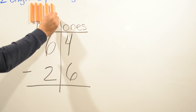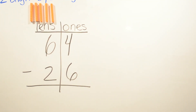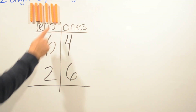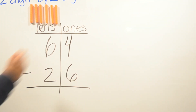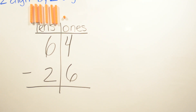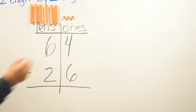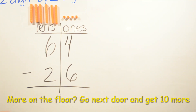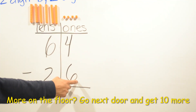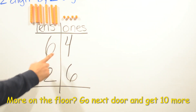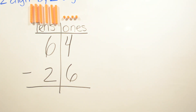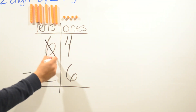Four, five, and six — one, two, three, four, five, six. And we have four ones: one, two, three, and four. Don't forget: more on the floor — which we do have more on the floor — go next door and get ten more. So we're gonna borrow from that six.